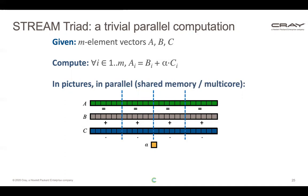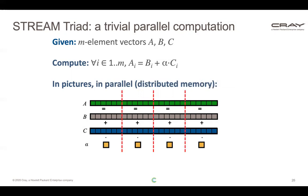In a shared memory execution, all tasks share the alpha scalar. In distributed memory, we give each task its own copy of alpha so it doesn't have to communicate across the network. Today, most parallel machines combine distributed and shared memory due to multicore processors — each compute node gets its own copy of alpha, and then chunks its portion of the vector across its local cores.